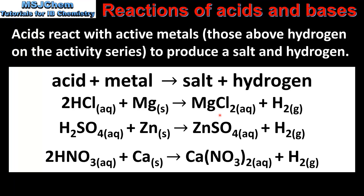Once again we can see the type of salt formed by each acid. Hydrochloric acid produces chlorides, sulfuric acid produces sulfates, and nitric acid produces nitrates. In all three reactions hydrogen gas is also produced. That's all from this video — don't forget that all my videos can be found on my website at www.msjchem.com.